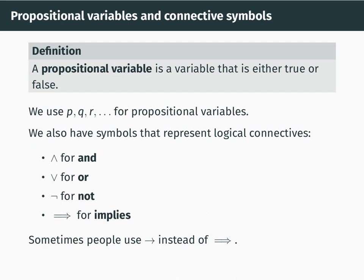In our formal language we need variables, and the kind of variables we will use are called propositional variables. A propositional variable is a variable which can take the value either true or false. If you've done any computer programming, this is like the concept of a bool or boolean variable. Traditionally we use symbols like p, q, r, s, and so on for propositional variables.